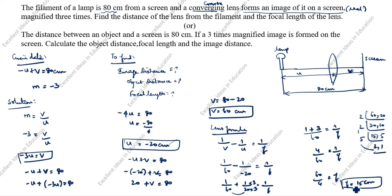The focal length comes out positive, which is correct — focal length is always positive for a convex lens.